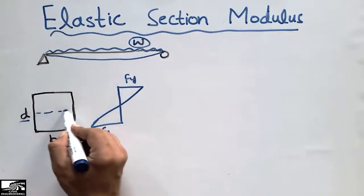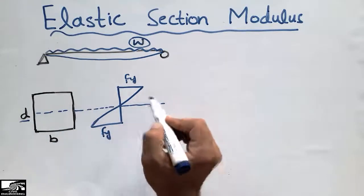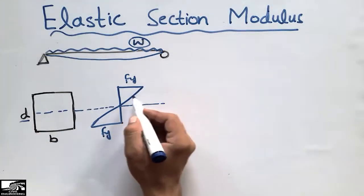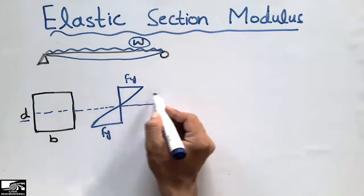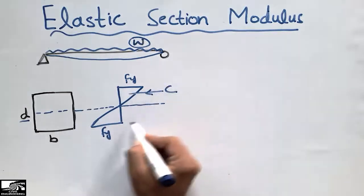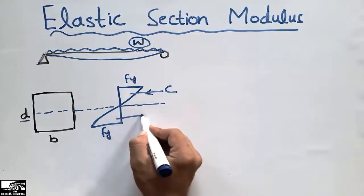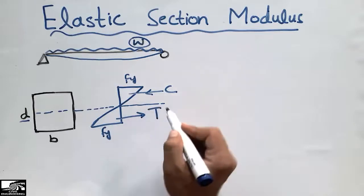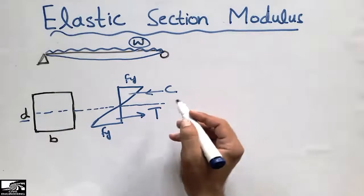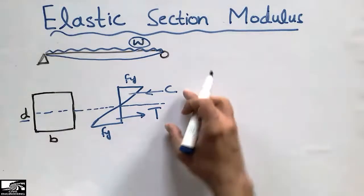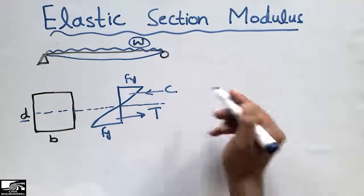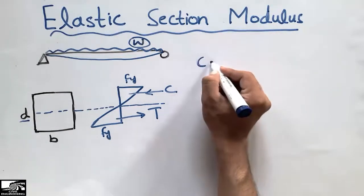For a simply supported beam, there is compression at the top while tension at the bottom. This is the neutral axis of this rectangular beam. We can see that the compression load is acting at the top of the beam while the tension load is acting at the bottom of the beam.